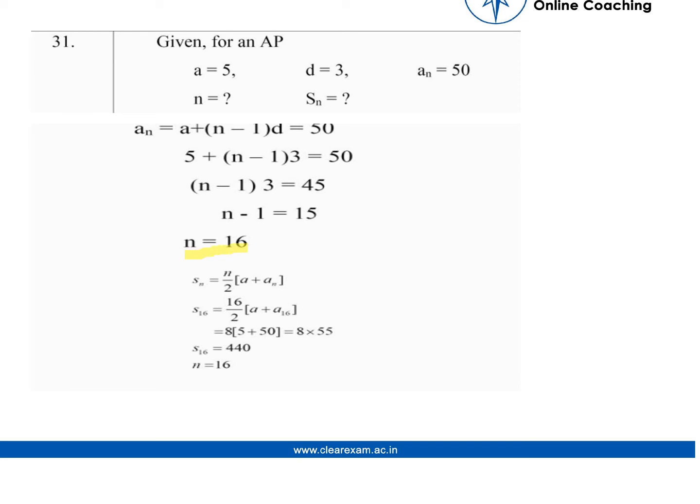So we have to find the sum of the first 16 elements. Finding the sum of the first 16 elements using the formula mentioned in the previous slide, the sum comes out to be 440 of the first 16 elements after substituting the value of first and the nth element.